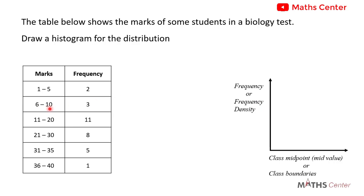A quick way to check whether the class width is the same for all intervals is by finding the difference between the upper class limit and the lower class limit for each class. If the differences are the same, then the class width will also be the same.